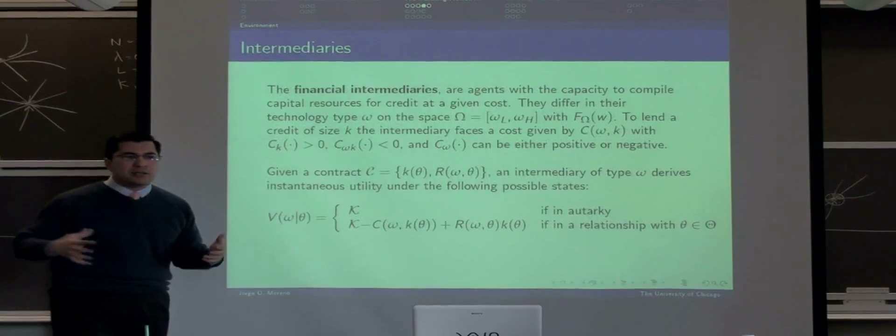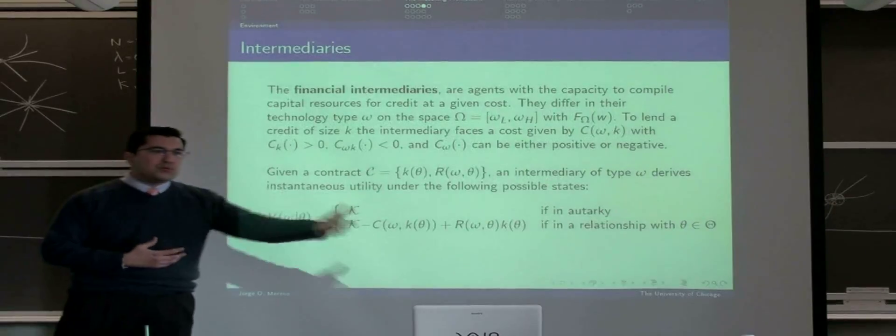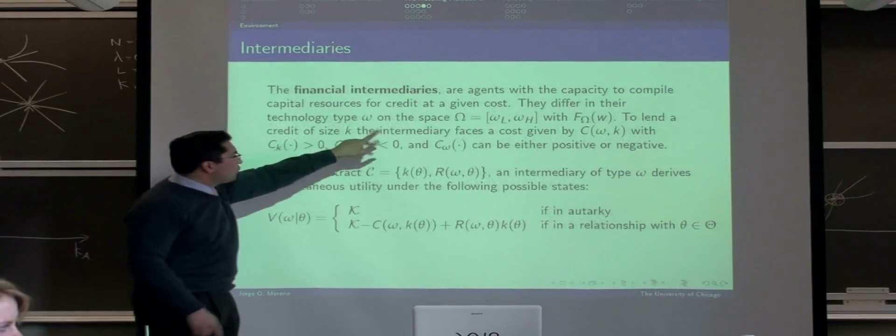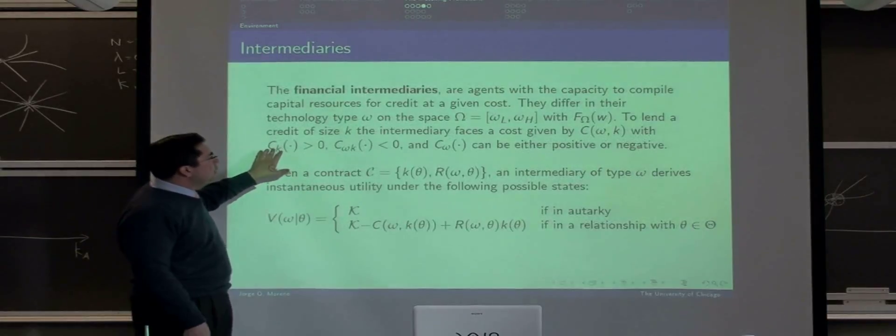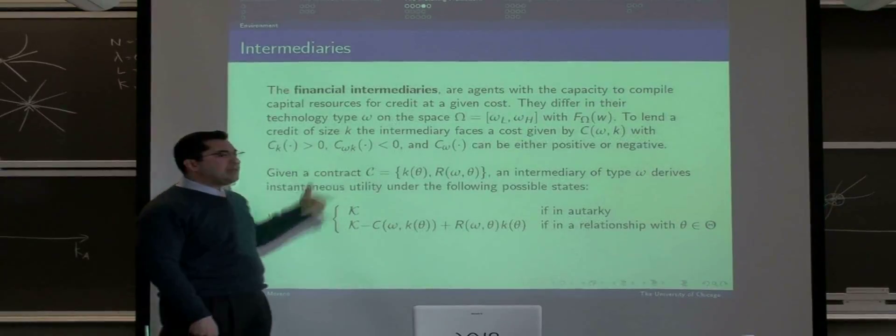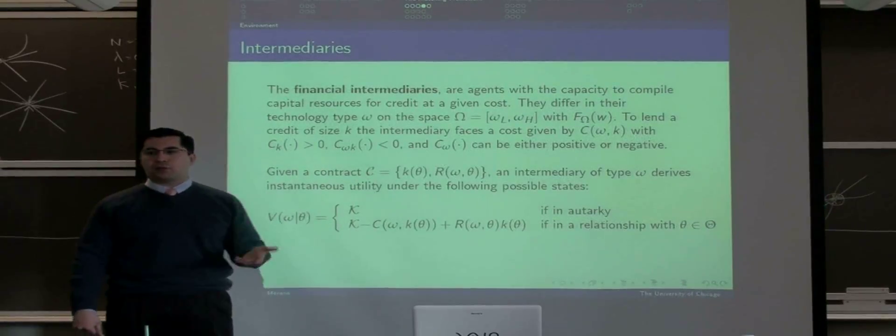The intermediaries are agents with the capacity to collect resources and put them into the market at a different cost. This cost function is going to be different only by the technology, and the assumption we are going to make is that better banks have lower marginal cost.